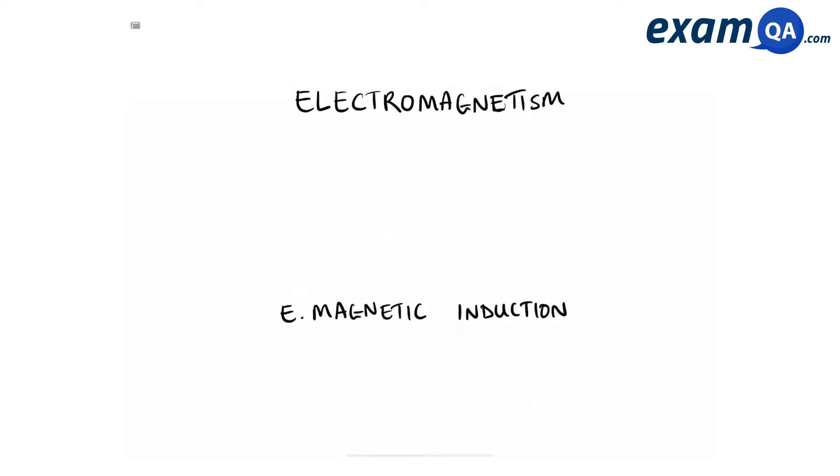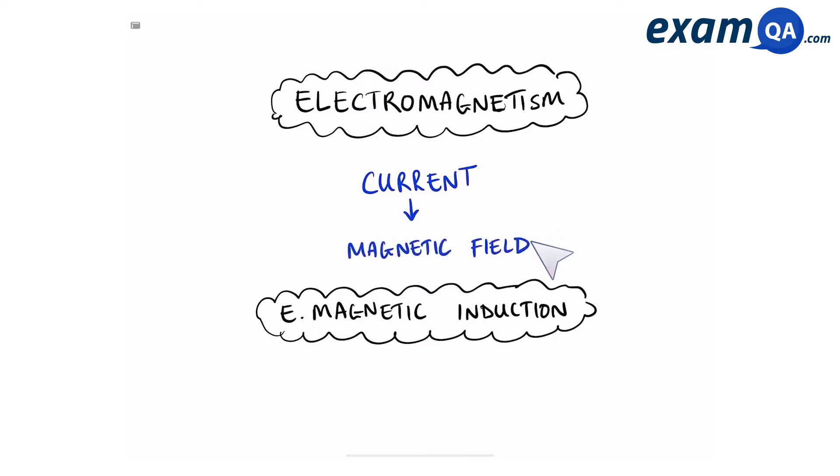The main two concepts in this chapter fall under two words: electromagnetism and electromagnetic induction. In electromagnetism, we're going to be using an electrical current, which is the flow of electrons, to create a magnetic field. And in electromagnetic induction, we're going to be using a magnetic field to help create a current.